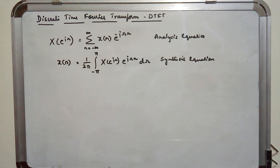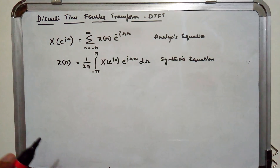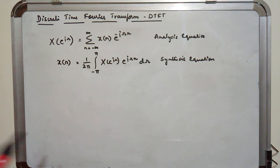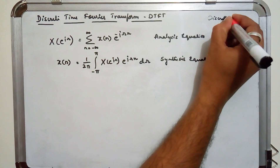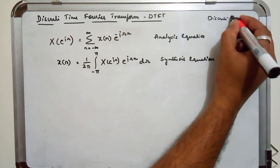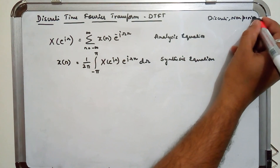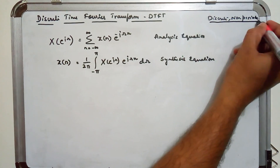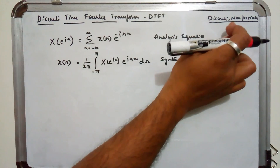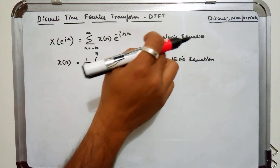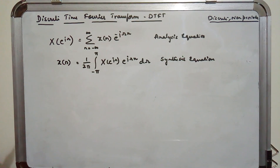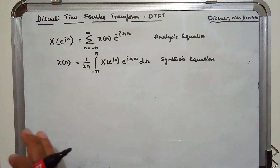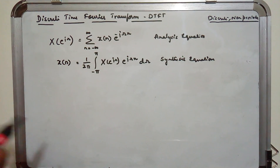In this video, we will be dealing with DTFT — it stands for Discrete Time Fourier Transform. This Fourier transform is applicable for a discrete signal that is also non-periodic. This is a fundamental thing you should know. I have explained it in different types of frequency representation of continuous time or discrete time signals, so you can look back at the videos already posted.